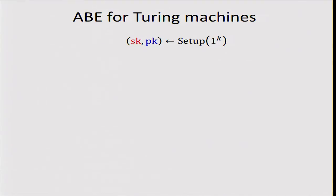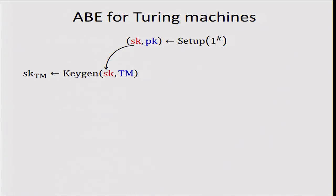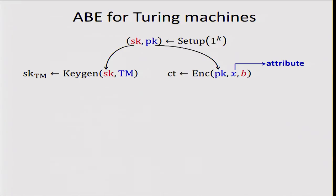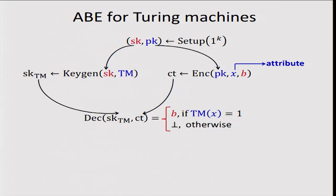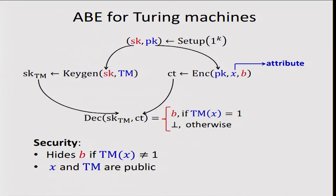What is ABE for Turing machines? The syntax is very similar to ABE for circuits. You have a setup algorithm that outputs a secret key and a public key. With the secret key, you generate a key for a Turing machine — so keys are tied to Turing machines. With the public key, you encrypt a bit B for a public attribute X. Using the key and the ciphertext, you obtain bit B if the Turing machine on X outputs 1, but obtain nothing otherwise. Security says that B is hidden if the Turing machine on X does not output 1; X and the Turing machine are public.